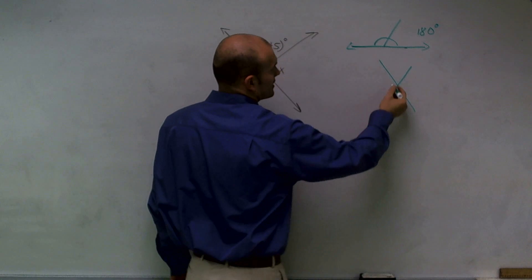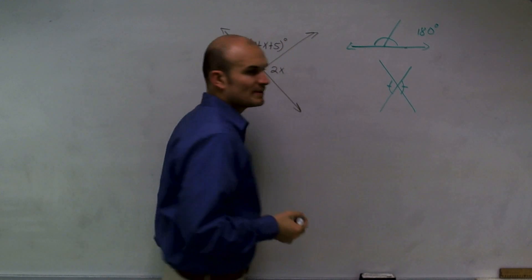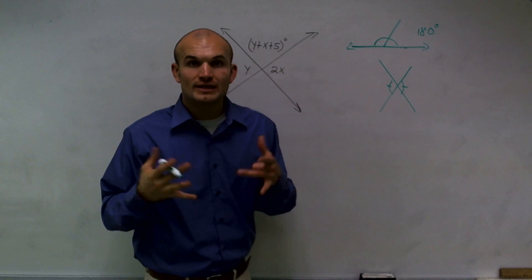The next thing is that when you have two angles that intersect, opposite angles are what we call vertical angles, and those are equal to each other.